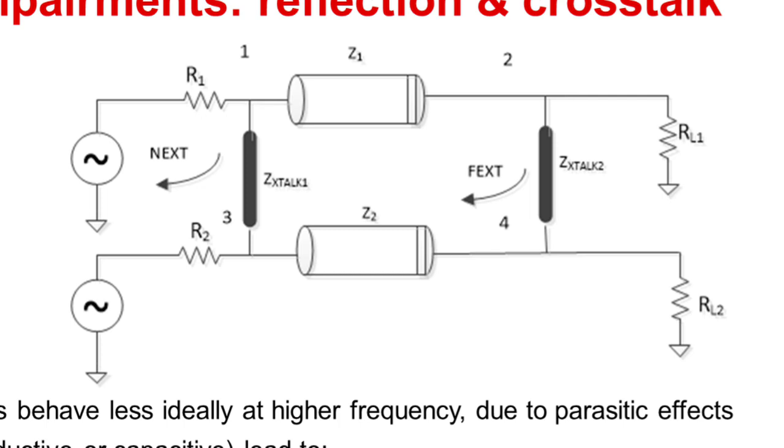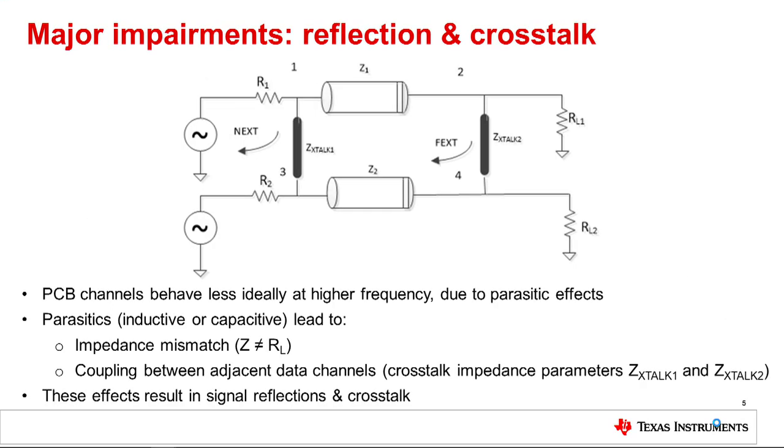In addition, at higher signal frequencies, it becomes more likely for signals to couple between adjacent data channels, primarily due to parasitic effects. This signal impairment effect is known as crosstalk. The use of large signal swings, usually to compensate for lossy transmission media, and signal reflections can further increase the likelihood of crosstalk.